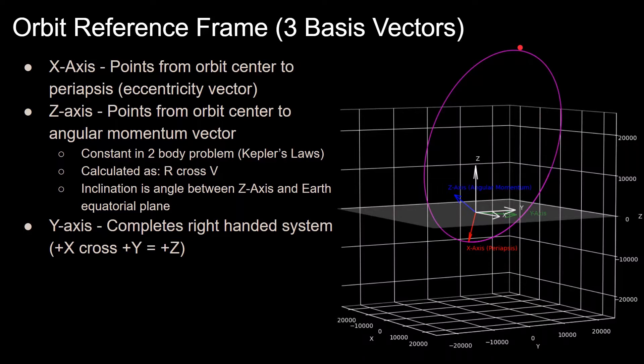We start with the x-axis, which is defined as a vector pointing from the orbit focus — the center of the Earth in this example — to the periapsis point in the orbit, shown as a red vector in the plot on the right.